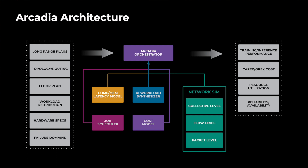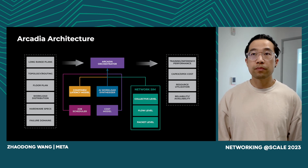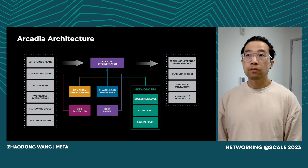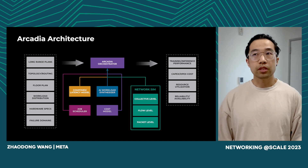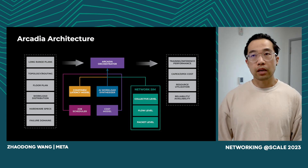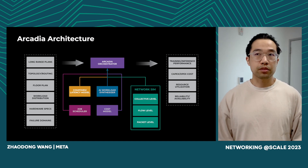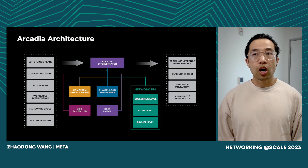Furthermore, it incorporates considerations of failure domains, ensuring a comprehensive evaluation of the system's performance and reliability. At the heart of Arcadia is an orchestrator that coordinates the simulation of various components, including job scheduling, compute, memory, and network behavior across different levels. Arcadia provides a wide range of outputs such as AI training and inference performance metrics, resource utilization, and metrics for reliability and availability. This allows stakeholders to analyze the impact of different factors and make informed decisions to optimize system performance.